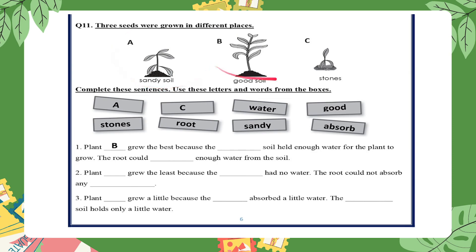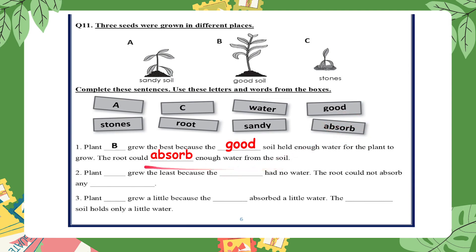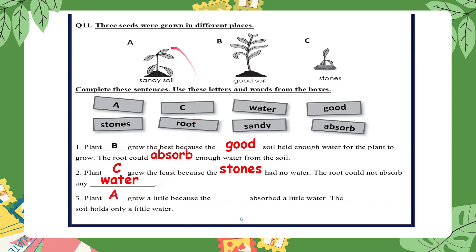Question eleven: three seeds were grown in different places — in sandy soil, in good soil, and in stones. Plant B grew the best because the good soil held enough water for the plant to grow, and the roots could absorb enough water. Plant C grew the least because the stones had no water and the roots could not absorb any. Plant A grew a little because the roots absorbed a little water — sandy soil holds only a little water.